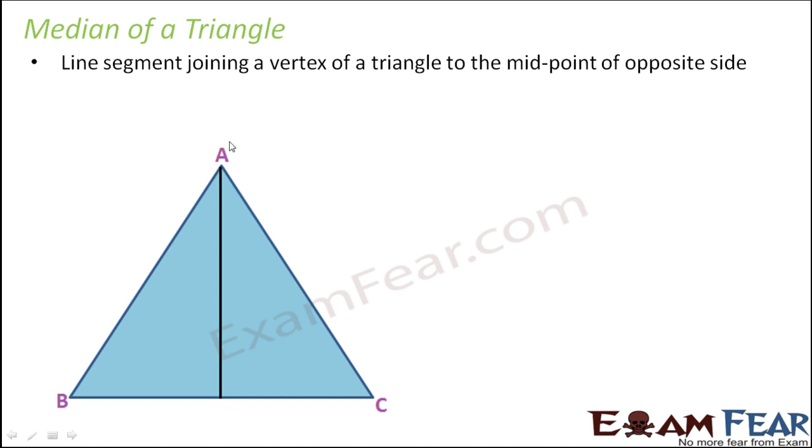So any line which joins a vertex, let's say the vertex A, the line joining vertex A and the midpoint of the opposite side. Which would be the opposite side for vertex A? Definitely this side. So BC is the opposite side for vertex A. Midpoint of BC is, let's say, D. So any line segment that joins A with D is called a median.